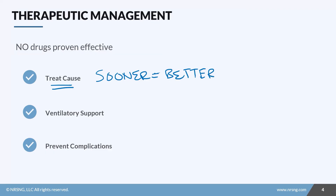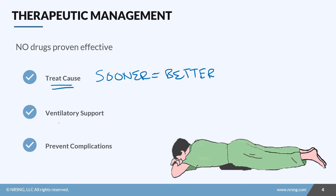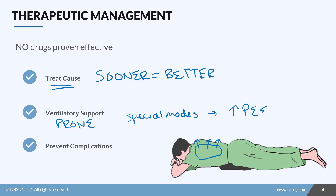We also have special interventions for ventilatory support, one of which is the prone position. The cool thing about prone position is it actually allows for better expansion of the lungs — on the back, there's better expansion compared to the front where we have the heart and ribs. We also use special ventilator modes, most commonly increasing PEEP — positive end-expiratory pressure — which keeps the lungs open and inflated at the end of expiration so the alveoli don't collapse.